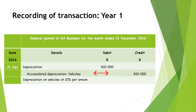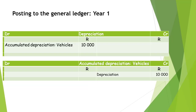In the next row, we write the name of the account to be credited, which is the accumulated depreciation account for vehicles in our example. The amount of 10,000 Rand is then recorded in the credit column of the same row. Once this is done, a short narration explaining what the transaction was is written in the next row. When posting the transaction to the general ledger, the depreciation account will be debited with 10,000 Rand and the accumulated depreciation for vehicles account will be credited with 10,000 Rand.